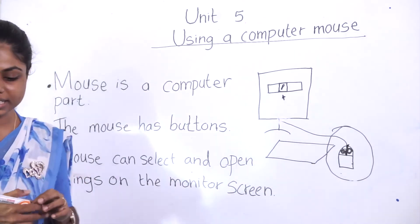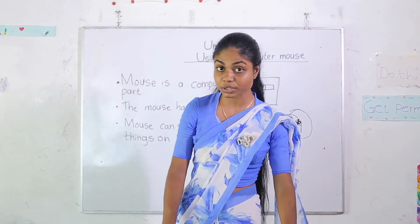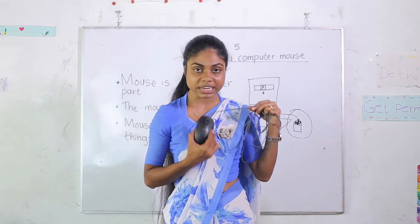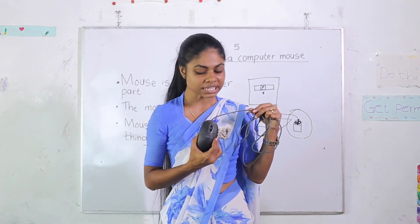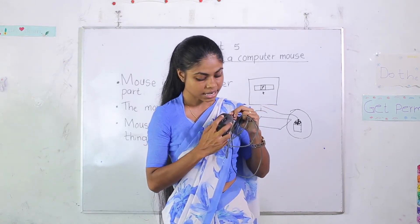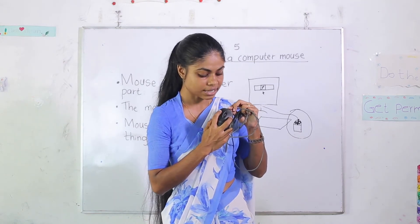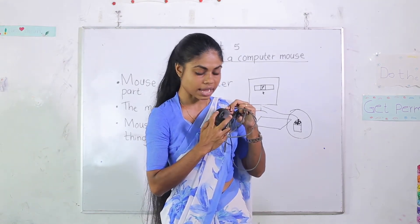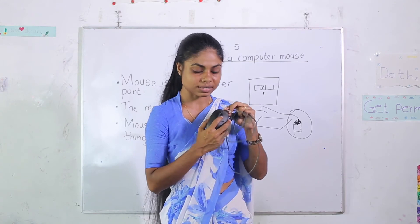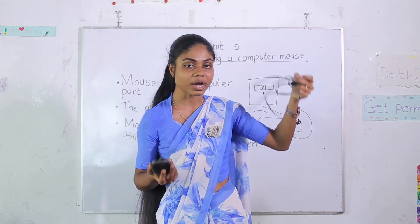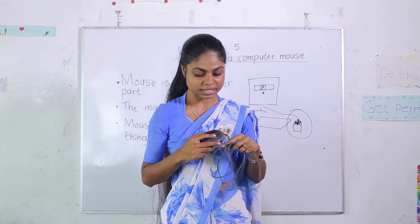I can show you a real mouse. This is a real mouse in the computer system. Now look here children. It has buttons. These parts you can press. These are the mouse buttons. And this is the tail. This is the wire. We are going to connect with the CPU.